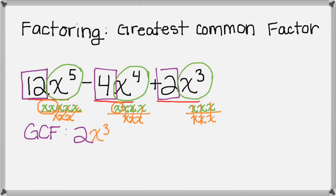I'm going to actually rewrite our original problem. So 12x to the 5th minus 4x to the 4th plus 2x cubed.